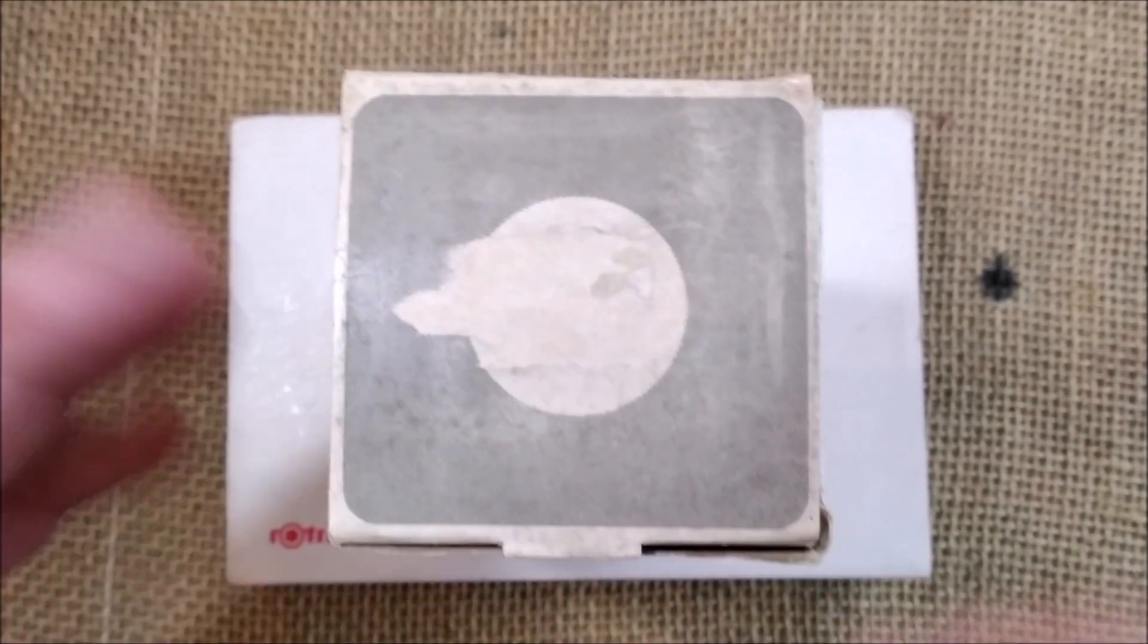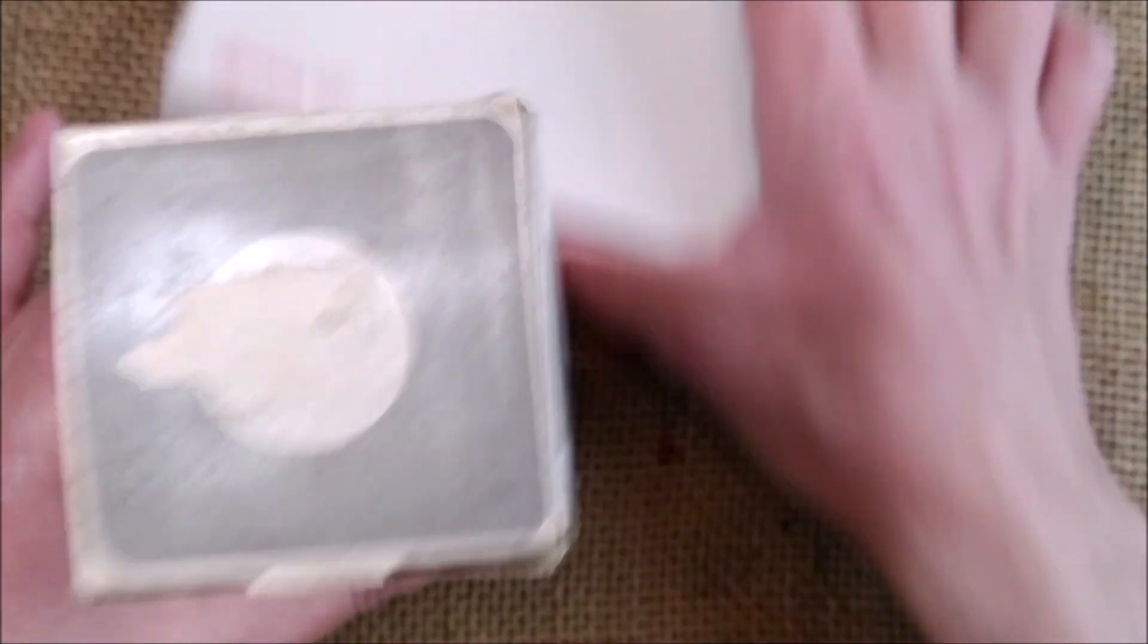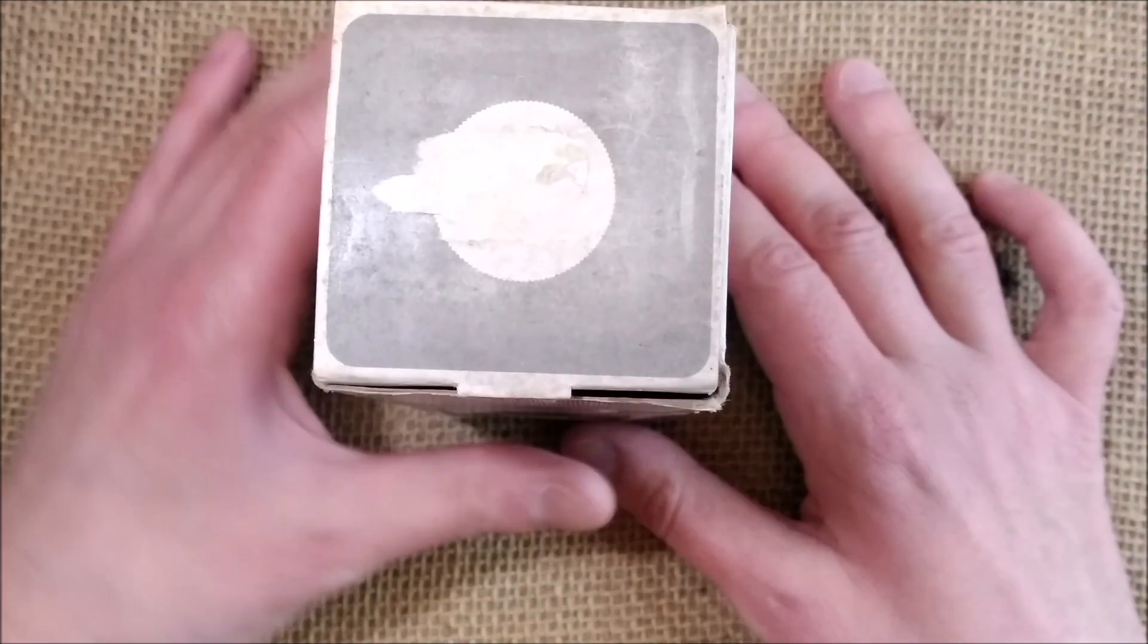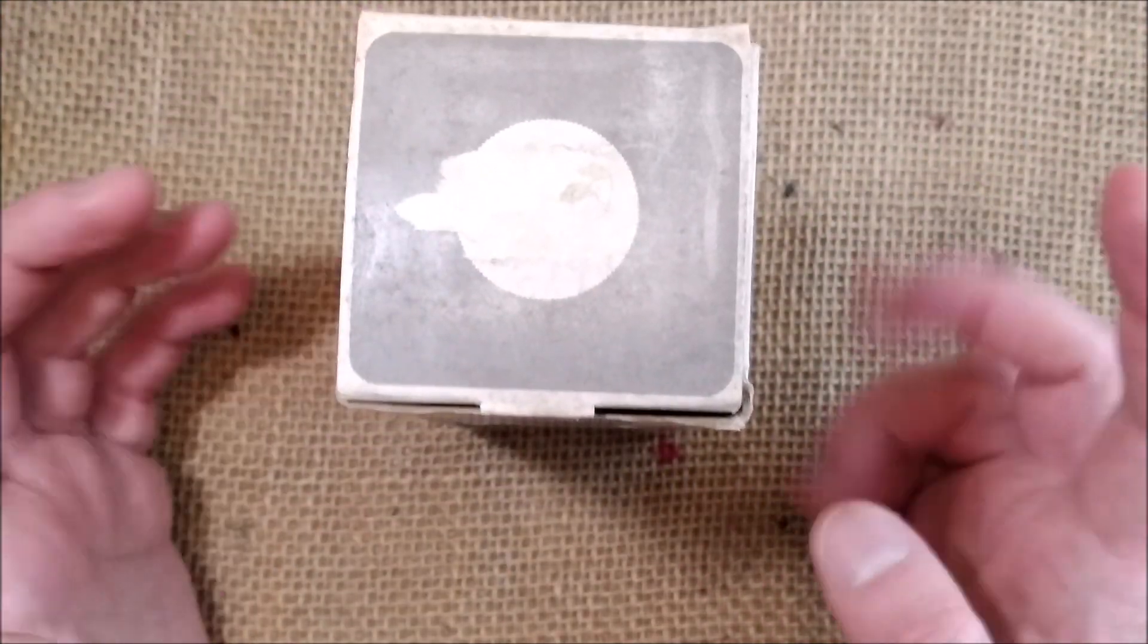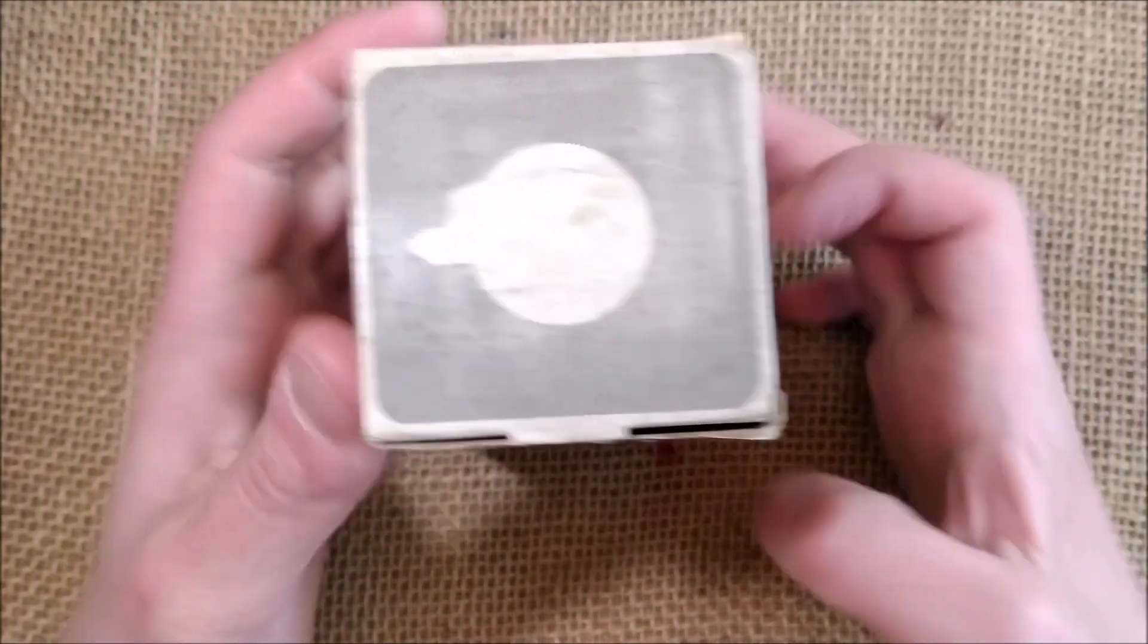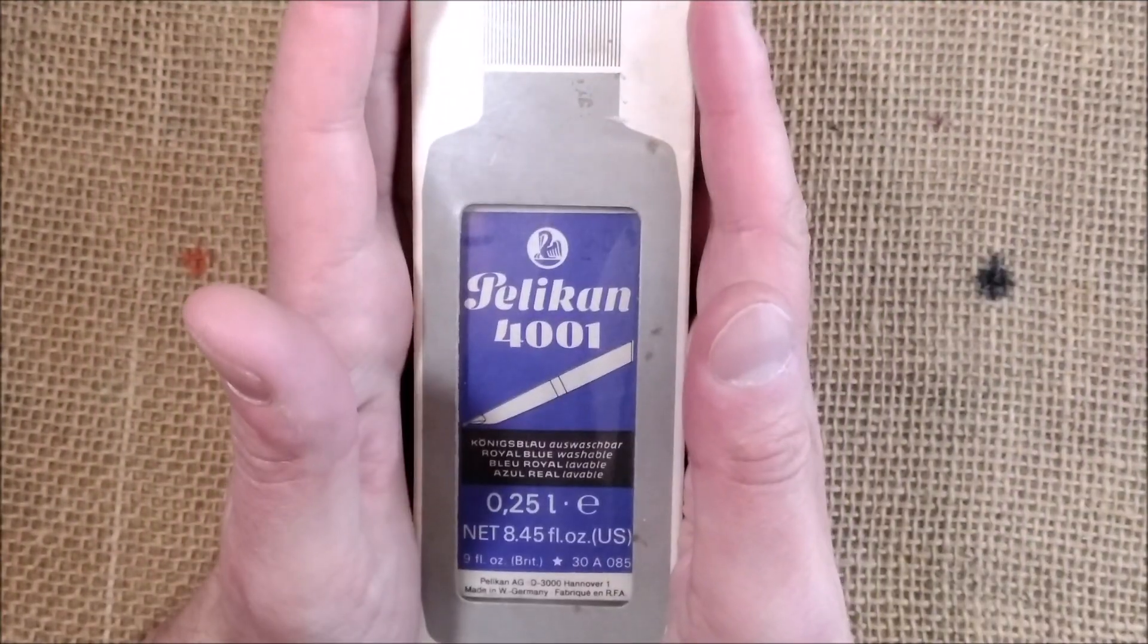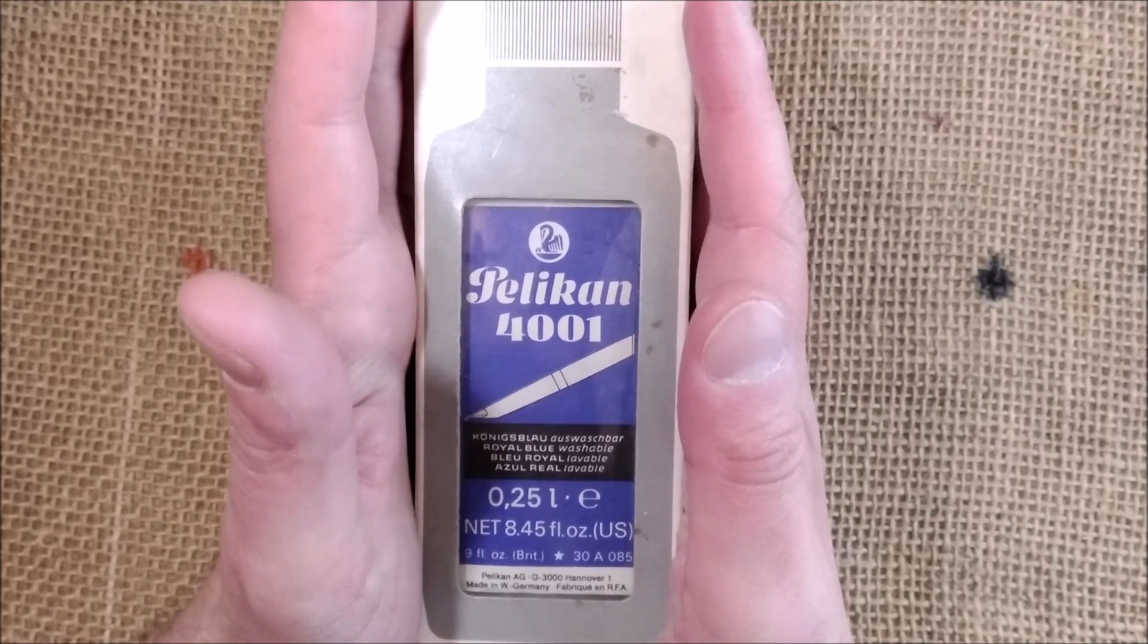I have here two items: one is this very tall one and the other one is this white box. Let's put the white box aside for now and let's take a look at this box. So this box is a box of Pelican 4001 ink.